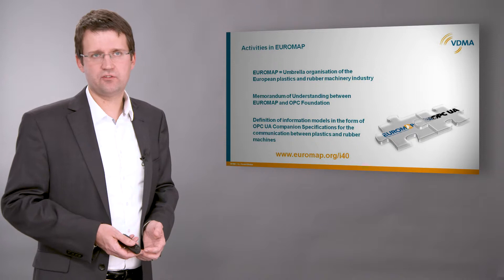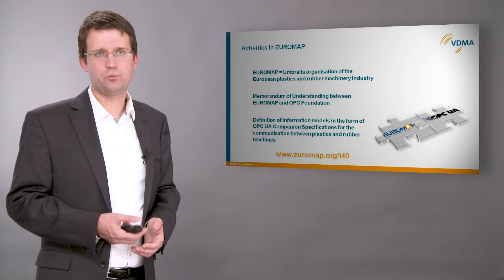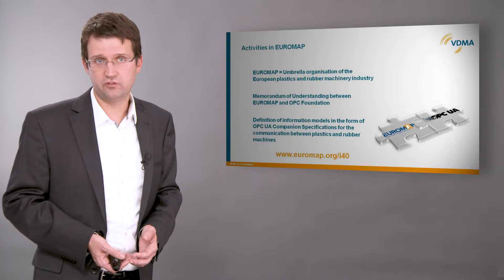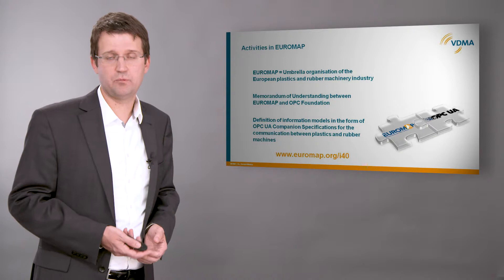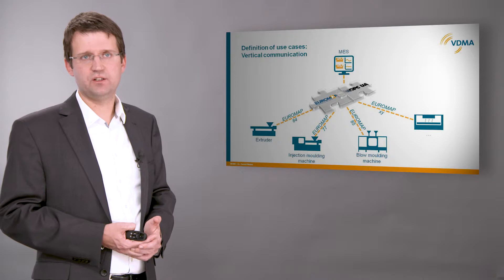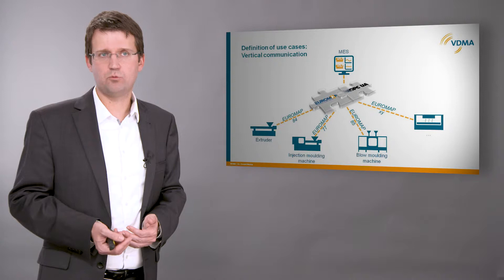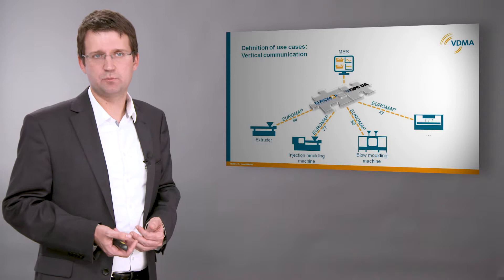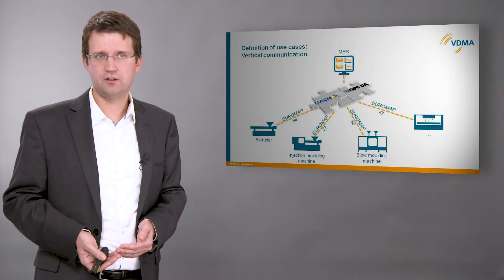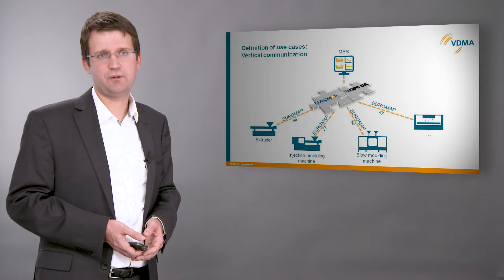As OPC UA itself is just a communication technology, the companion specifications define information models — which data is exchanged via the interface. Since 2014, several working groups have been established within Euromap, also with the support of the OPC Foundation. Euromap signed a memorandum of understanding with the OPC Foundation. An overview of our activities can be found on our website, Euromap.org. In the working groups, we have to distinguish between different use cases. On the one hand, we have the vertical communication between machines and central computers — MES. The main functionalities here are the monitoring of the machine and the processes, management of jobs, and also the management of programs and setting data for the machines. Current projects are Euromap 77 for injection molding machines and Euromap 84 for extruders.